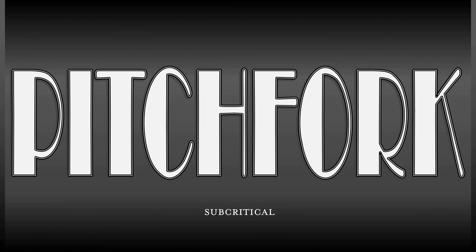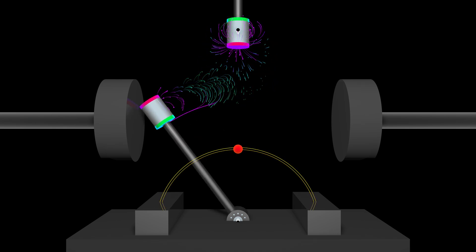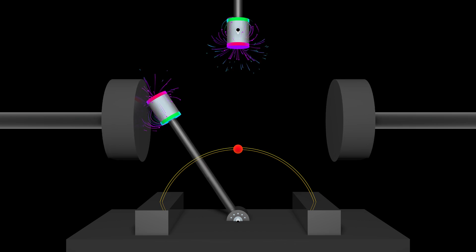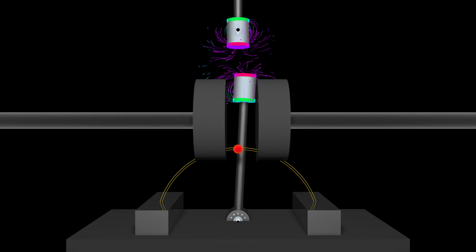For a subcritical pitchfork bifurcation, we're going to change the system. We're going to look at an inverted pendulum with a magnetic bob, where there's a second magnet on top of it. If we start off with that magnet having repulsive force, then we have a single unstable equilibrium at zero deflection from the vertical. A slight push, and that's it.